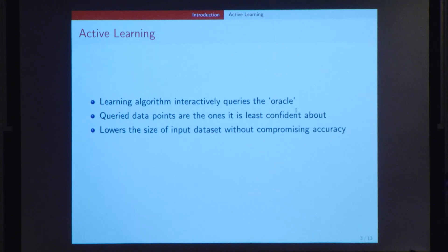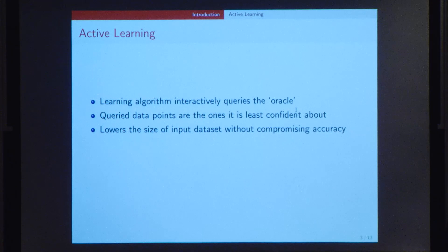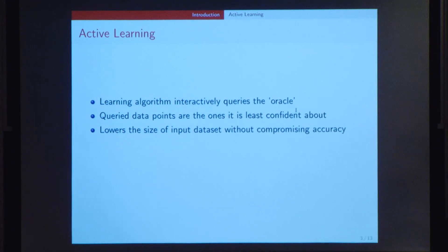This concept in machine learning is very similar. Basically the learning algorithm interactively queries the oracle, which could be, for example, a human annotator. And the query data points are the ones that the algorithm is the least confident about making predictions. By doing this, you can effectively lower the size of the input dataset without actually compromising on the accuracy of the predictions.